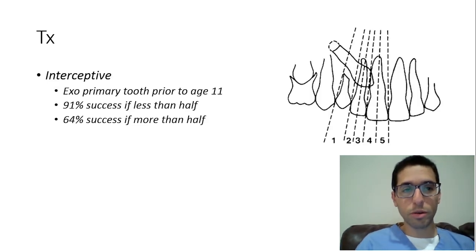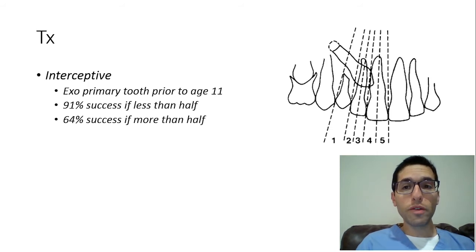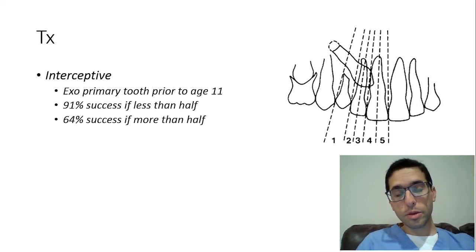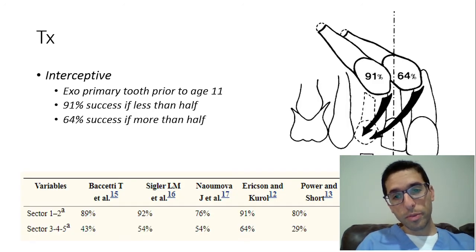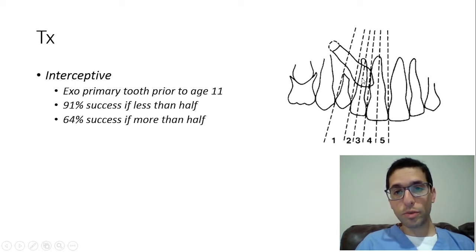On the boards, getting a CBCT is a perfectly fine answer. When you do have an impacted canine, ideally if you intercept it prior to age 11 — before the canine would erupt — you can still treat it without ortho. Erickson came up with five sectors based on the position relative to the lateral incisor. Sector one is before the impacted canine crosses the lateral incisor; sector two means it crosses up to 50%.